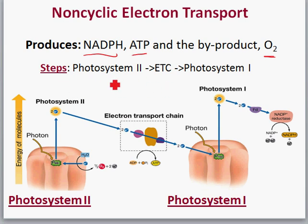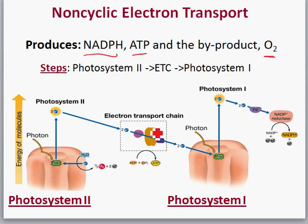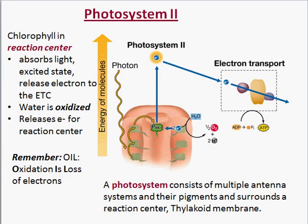Non-cyclic electron transport has three steps: photosystem 2, the electron transport chain, and photosystem 1. On the left is photosystem 2, then we travel to the electron transport chain, then to photosystem 1, and finally to an enzyme called NADP reductase. The next series of slides will walk through each of these steps in more detail, starting with photosystem 2.